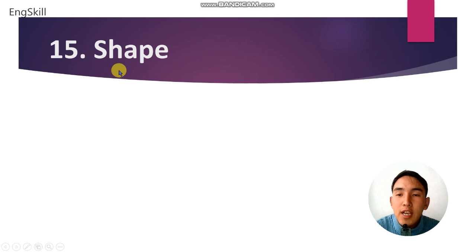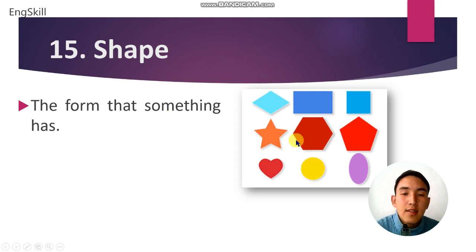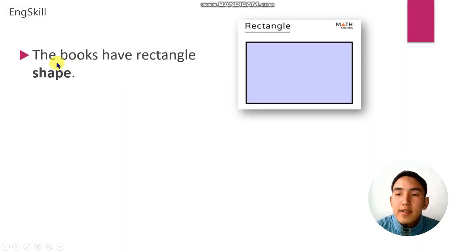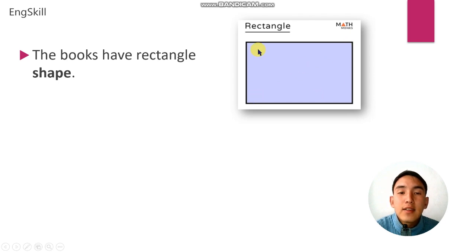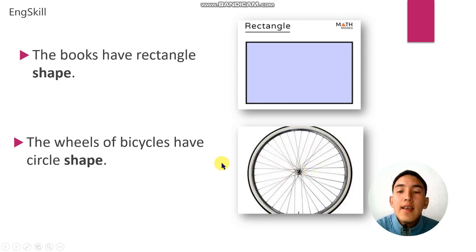Number 15 is shape. Shape means the form that something has. These are shapes. For example: the books have a rectangle shape. Another example: the wheels of bicycles have a circle shape.